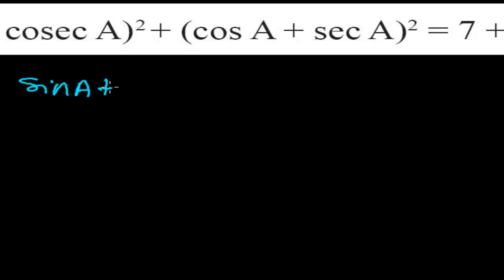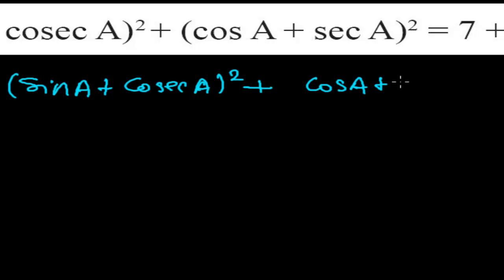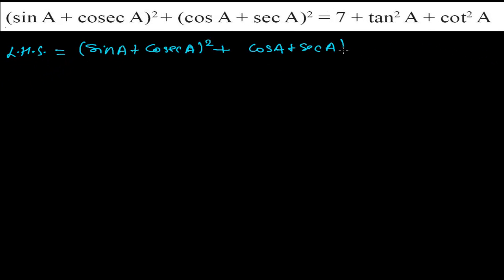Welcome friends, once again in another Trigonometric Identity Proving problem. Here we need to prove that the LHS part equals the RHS part. So our left hand side is: (sin a + cos a)² + (cos a + cosec a)².